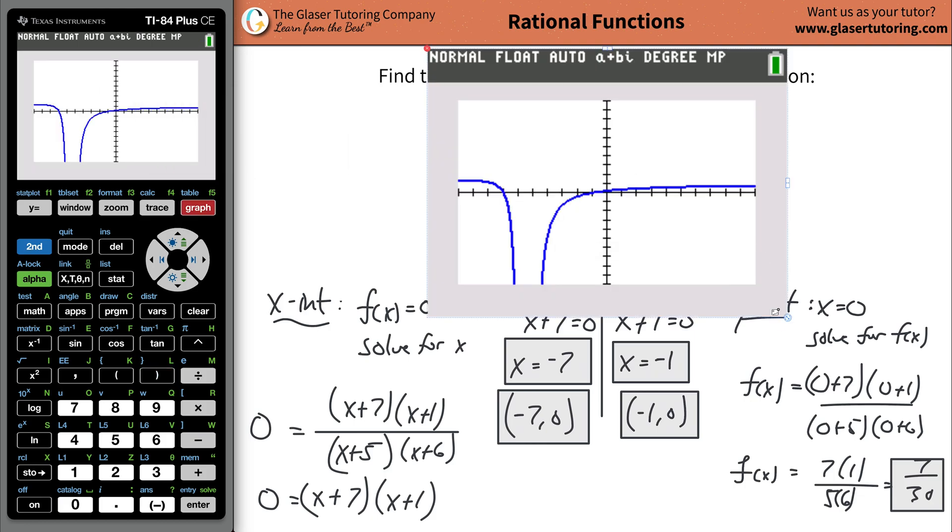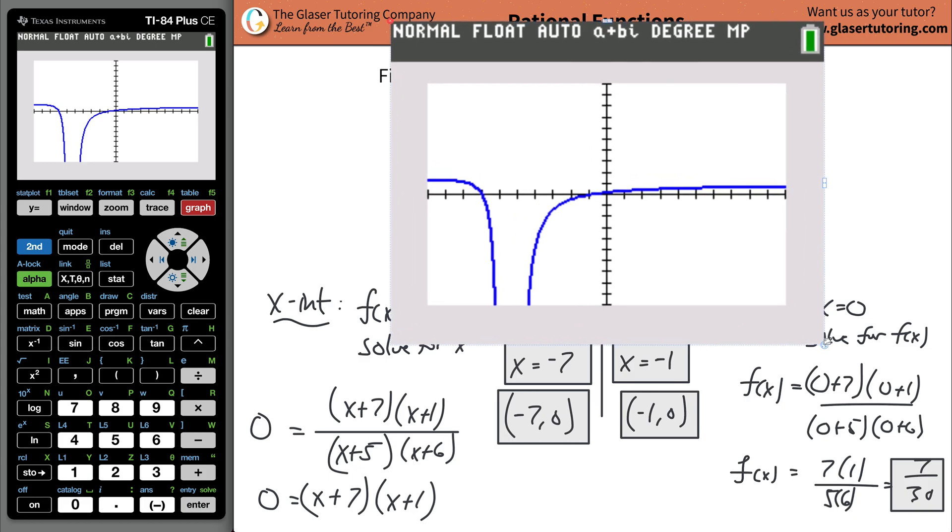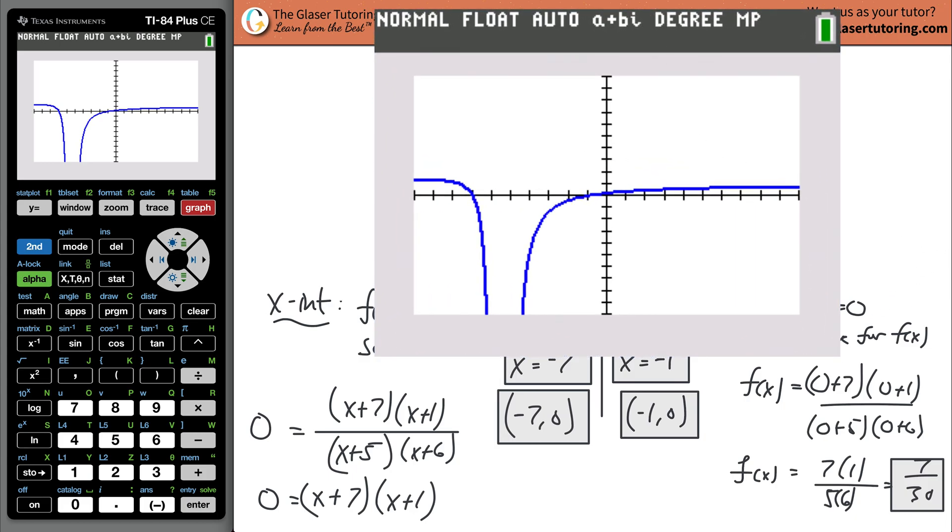Now let's bring this out and we'll blow it up a little bit. So what did we say? We said we had x-intercepts here at negative 7. So look, this is exactly negative 7, right? Negative 1, 2, 3, 4, 5, 6, negative 7. And then it looks like it crosses right here at negative 1 as well. So that's what we said for the x-intercepts.